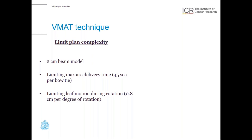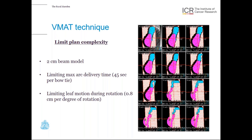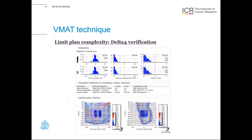We also limit MLC leaf motion during rotation to 0.8 centimeters per degree of rotation. A typical beam's eye view of one of our partial arcs shows the whole breast PTV in pink and the nodal PTV including the IMC in blue. For a large proportion of the partial arc, we have mostly an open field conforming to our target volumes, and at some gantry angles the MLCs close in to achieve the desired dose distribution. For all breast VMAT plans, we do a pre-treatment verification on the machine using the Delta IV PHANTOM software.